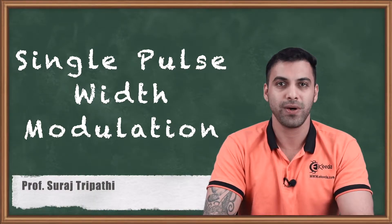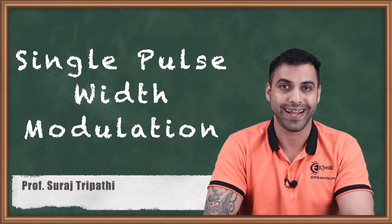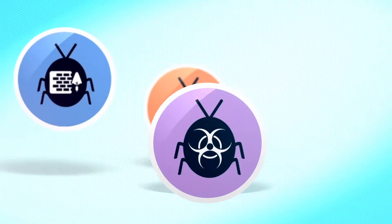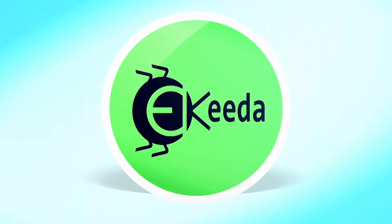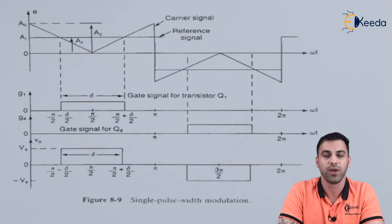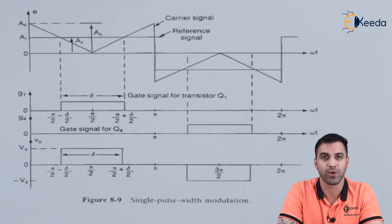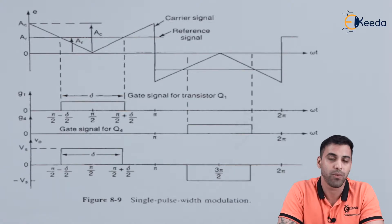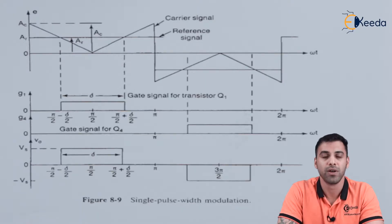Hello friends, today we are going to discuss about Single Pulse Width Modulation Technique of an Inverter. In the earlier lecture we talked about different techniques through which we can control the inverter output voltage. The first technique is single pulse width modulation technique, where we will be changing the width of a pulse to control the on-time or to control the gate signal of a transistor, so that the output voltage of the inverter can be controlled.